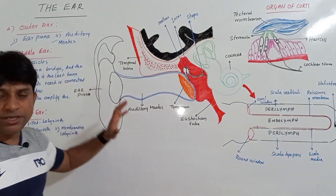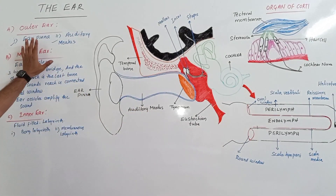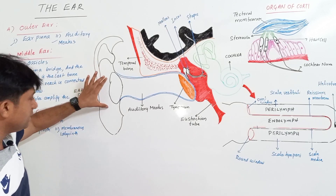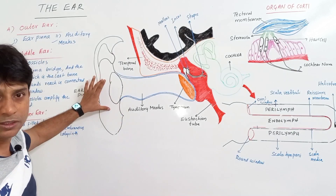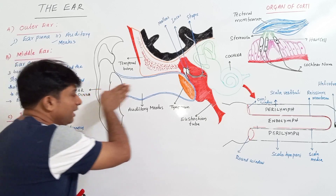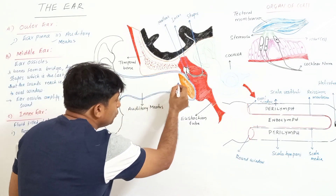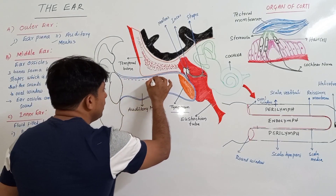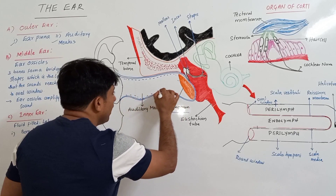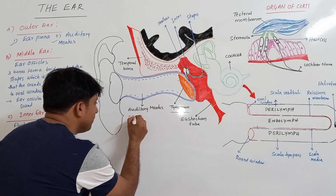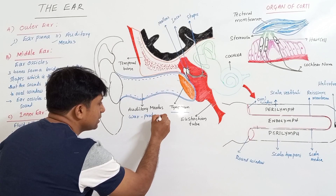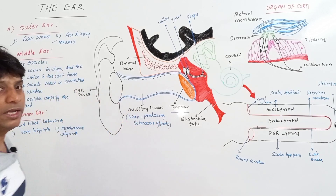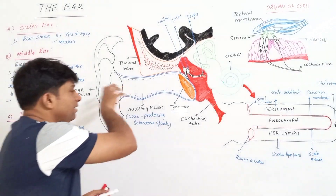Anatomically, the ear is divided into three parts: outer ear, middle ear, and inner ear. The outer ear has the ear pinna and auditory meatus. The ear pinna receives vibrations of the air produced due to sound. The auditory meatus extends inwards and carries the sound waves to the tympanum or eardrum. The auditory meatus, along with the external ear pinna, is lined with hairs as well as wax-producing sebaceous glands.